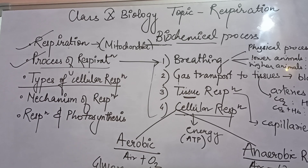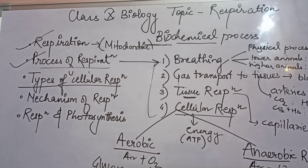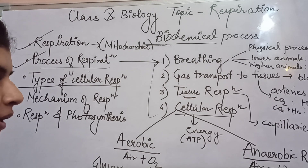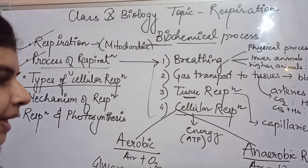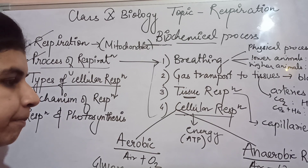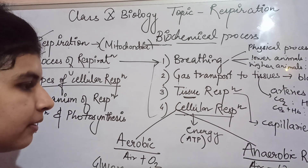Anaerobic respiration is slightly different. Here, glucose is first converted into pyruvic acid, then into acetaldehyde, and then into ethyl alcohol. So in anaerobic respiration the breakdown of glucose is incomplete compared to aerobic respiration.